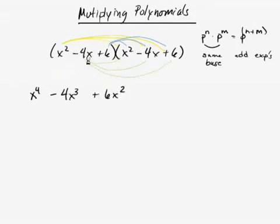Then you do the same thing with the 4x here. So negative 4x times x squared is, I'm going to put this down in the x cubed column, because my answer is 4x cubed. And negative 4x and negative 4x is positive 16x squared. And then the 4x times the 6 is going to give me a negative 24x. And it just works out that they happen to have the same exponent here, and so I put everything in these columns. I'll do another example later on where they don't, but for right now, let's finish this one up.